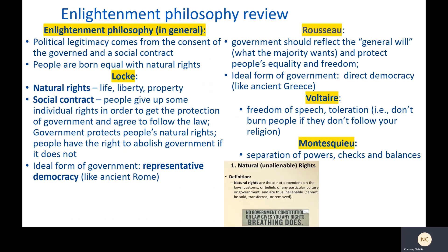In a time where a king was supposed to be born with a divine right to rule — not equal to everybody else — and society was structured with a nobility that set itself apart from the masses, the idea that everybody, king and peasant alike, were born equal was pretty revolutionary. Natural rights were also a novel idea. Locke's natural right to life, liberty, and property would prove especially influential, as would Locke's idea of the social contract, where people give up some individual rights to get the protection of government, and in turn, government protects people's natural rights, and the people have the right to alter or abolish a government that fails to do this.